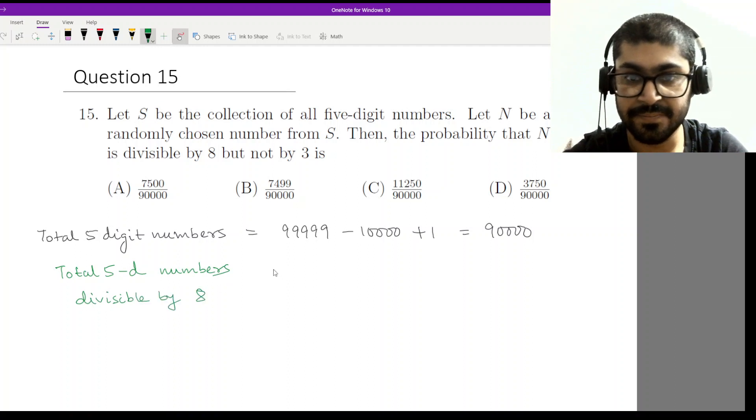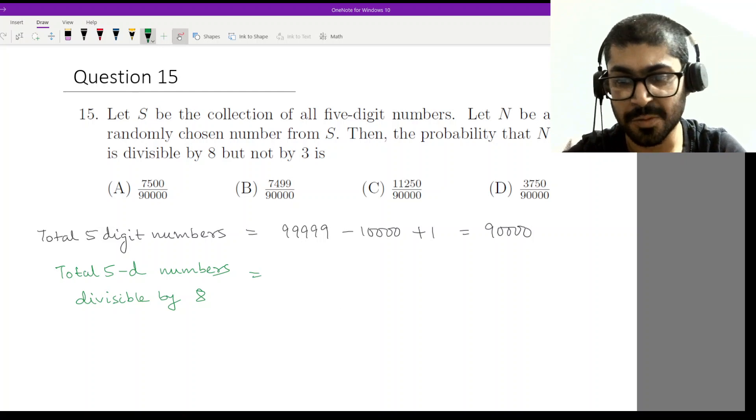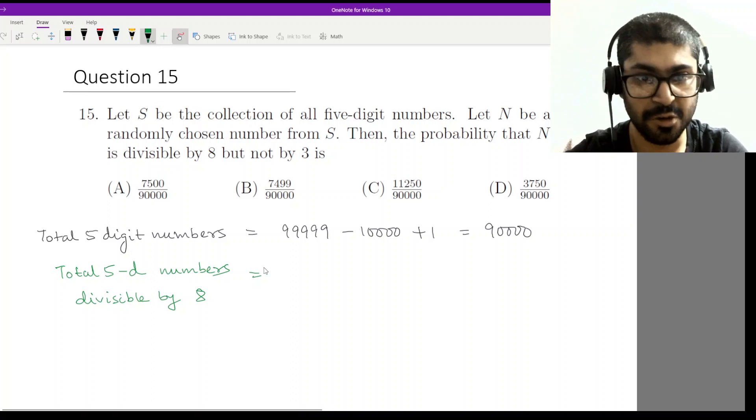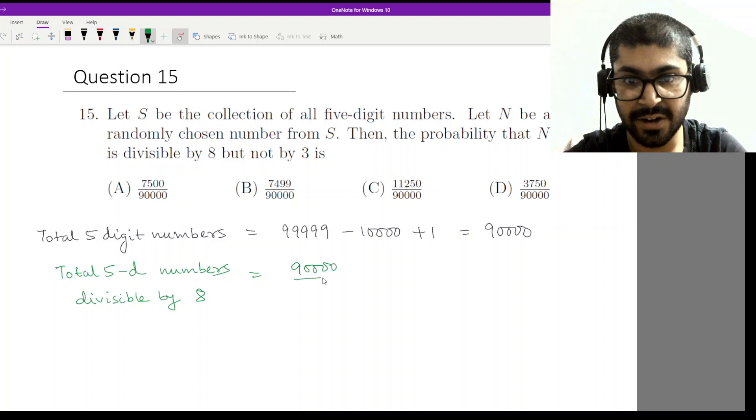Total five-digit numbers divisible by 8. How will I calculate this? It's very easy. I'll just have to divide 90,000 by 8 and check the number appearing in quotient. So 90,000 divided by 8 is 11,250.